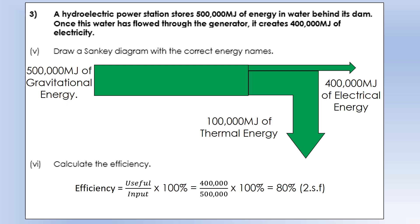We're producing 400,000 megajoules of electrical energy, which means we're wasting 100,000 megajoules in the form of thermal energy. And again, that's going to be caused by friction, by air resistance, all of these different things.